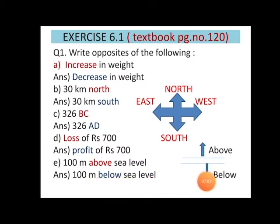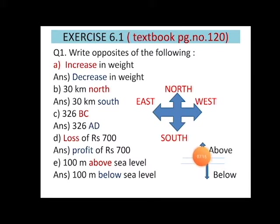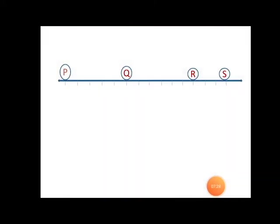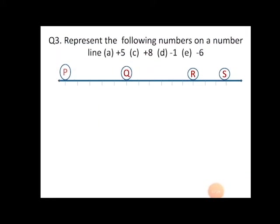For 100 metres above sea level, the opposite is 100 metres below sea level. As you can see, the figure on the screen uses arrows — the arrow facing upward represents above sea level, whereas the arrow facing downward represents the below region of sea level.